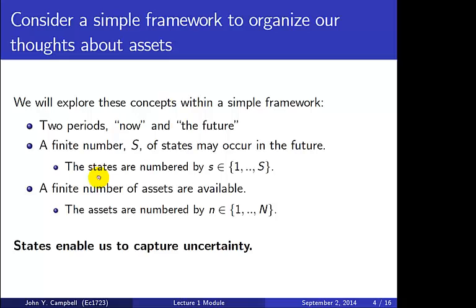Let's set up a very simple framework to organize our thoughts about assets. We're going to assume there are two periods — call them now and the future, or today and tomorrow — though I want to be vague about the length of time between them. We want to capture some notion of uncertainty in the simplest possible way, by assuming there's only a finite number of states that may occur in the future. We'll call that finite number capital S, and number the states by little s, running from 1 to big S.